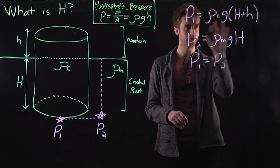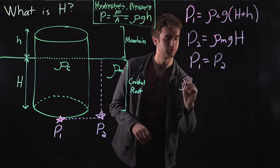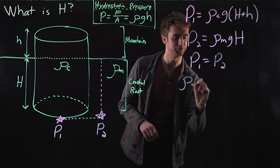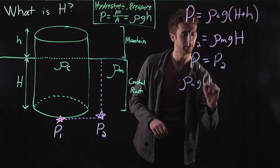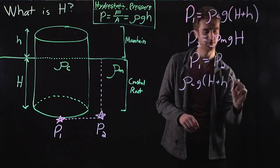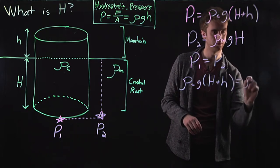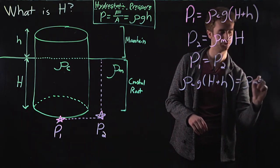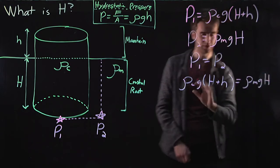Or, using these equations, rho c, g, H plus h equals rho m, g, H. All right.